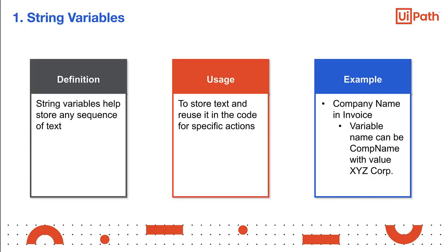String or text variables are variables in which the users can store any strings, that is to say, a sequence of text. Arithmetic operations cannot be applied on them. These variables can store information like user names, employee names, and so on.